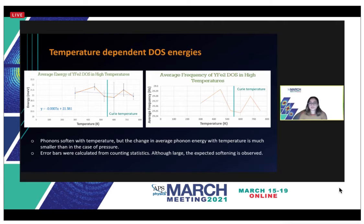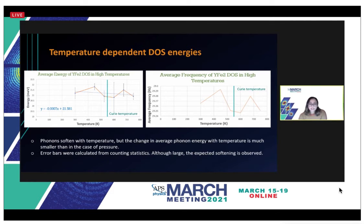Similarly, we observed the temperature-dependent phonon DOS energies and the relationships of energy versus temperature and frequency versus temperature. As seen in the density of states curves, there is a softening in the phonons with increasing temperature. However, there isn't a large change in the average phonon energies — the highest peak is around 21.75 millielectron volts and the lowest is close to 21 meV. Since our data was slightly noisy we plotted error bars, but we still see a softening in the phonons with increasing temperature. The Curie temperature is shown at 545 Kelvin.